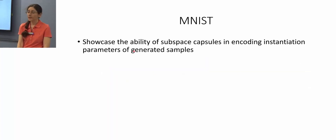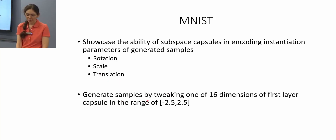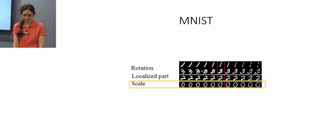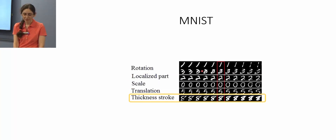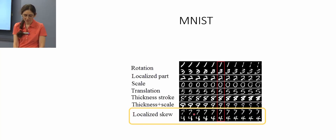Here we showcase the ability of subspace capsules to encode instantiation parameters of generated samples — like rotation, scale, and translation. We generate samples by tweaking one of the 16 dimensions of the first-layer capsules in the range of −2.5 to 2.5. As can be seen, properties like rotation, localized parts, scale, translation, thickness of stroke, and localized skew can all be changed by modifying one dimension of the capsule subspace.